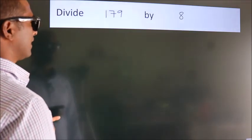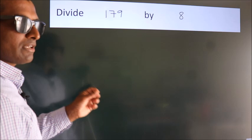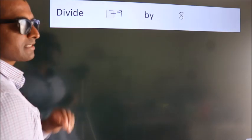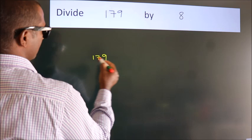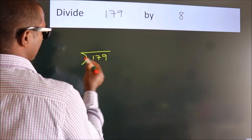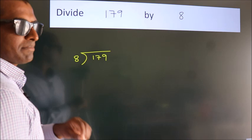Divide 179 by 8. To do this division, we should frame it in this way. 179 here, 8 here. This is your step 1.